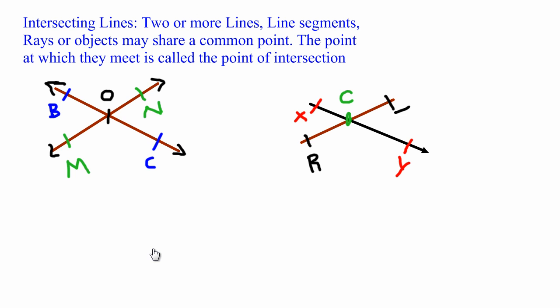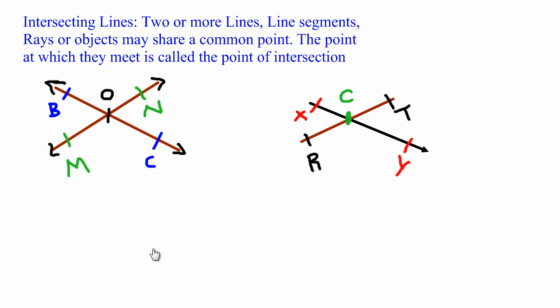So this is our line segment RT. Now I could say that the ray XY intersects, or it meets, the line segment RT at the point C. So C is a common point that the ray XY and the line segment RT share. And also we could have lines intersecting objects.